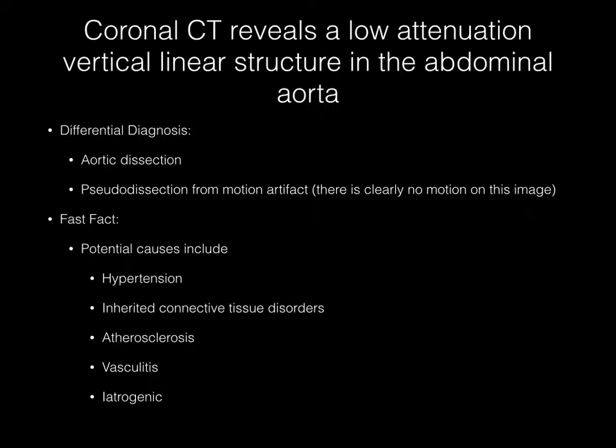This coronal image from a CT angiogram reveals a low attenuation vertical linear structure in the abdominal aorta. The diagnosis here is aortic dissection. You may mention pseudodissection, which might be seen from motion artifact, although there is clearly no motion on this image.